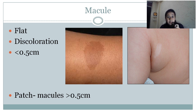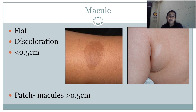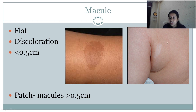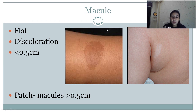Coming to the first — macule. What is a macule? This is a flat discoloration of less than 0.5 cm. You can see there is discoloration of skin. In the first picture there is hyperpigmentation, and in the second picture there is hypopigmentation. These are flat lesions — they are not raised or depressed, just a flat lesion.